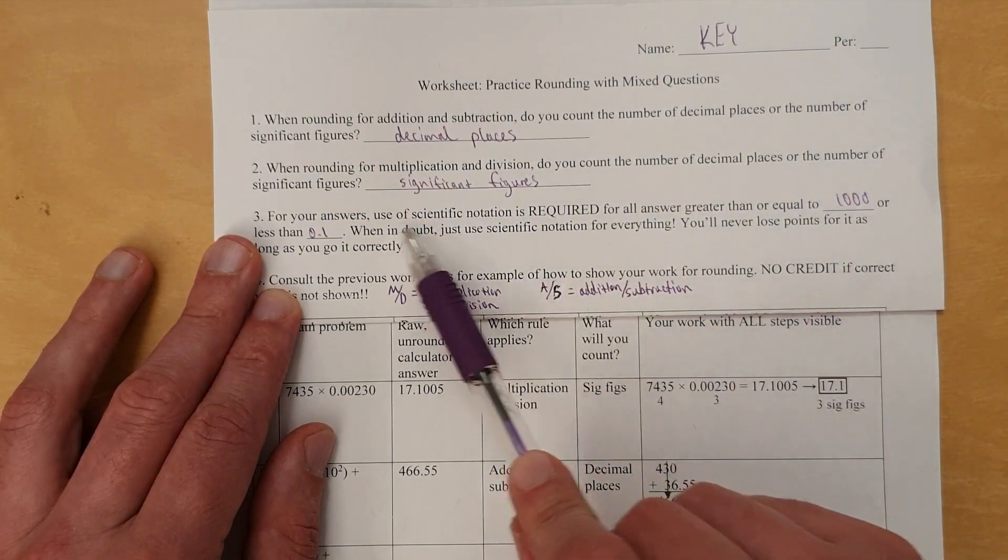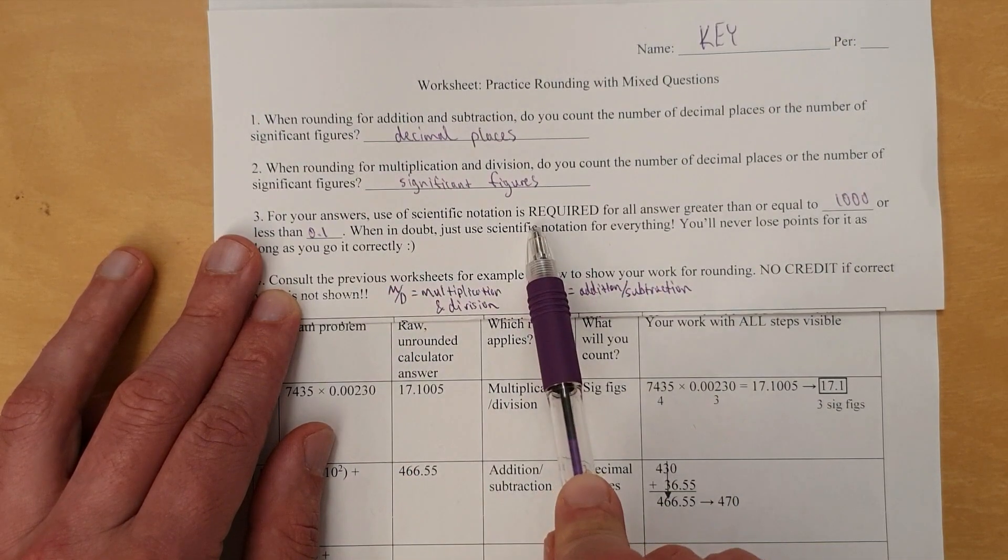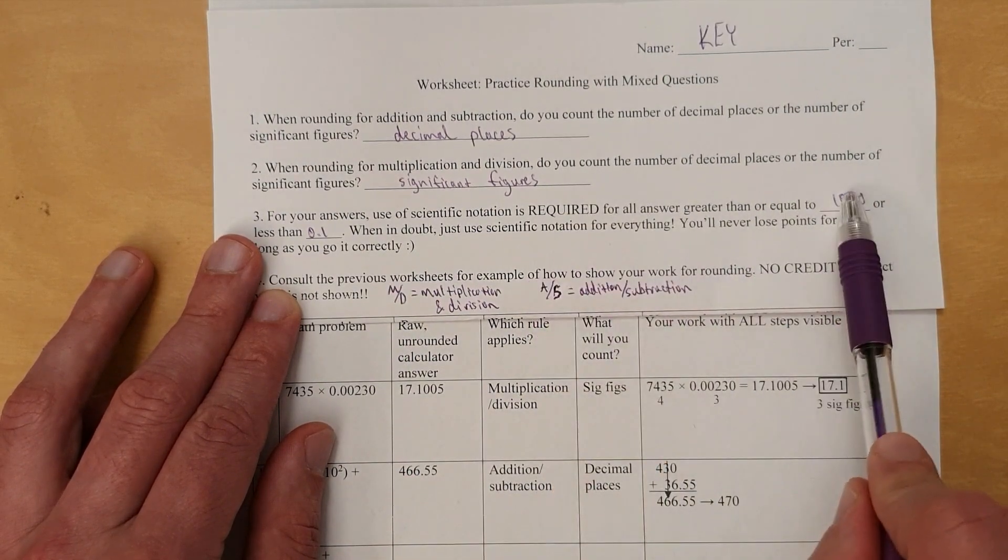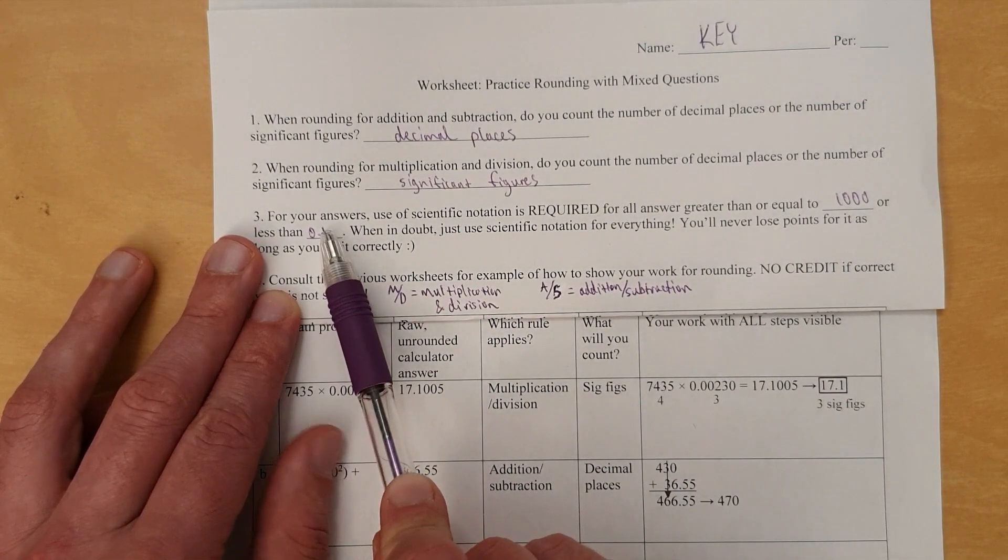Use scientific notation for any number greater than a thousand or less than 0.1. You can use it for any number. You'll never lose points. However, outside the range between this and this, if you don't use it, you lose points. So if in doubt, just use scientific notation for everything.